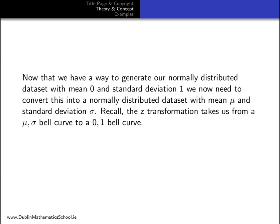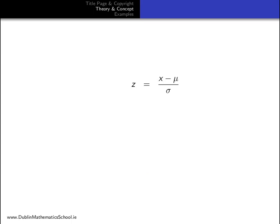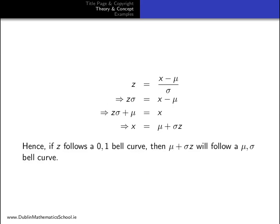Recall, the Z transformation takes us from a μ-σ bell curve to a 0-1 bell curve. Therefore, the inverse of this operation is what we require. Z equals x minus μ over σ. Bringing the σ up to the left and taking the μ over to the left, we arrive at the result that x equals μ plus σZ. Hence, if Z follows a 0-1 bell curve, then μ plus σZ will follow a μ-σ bell curve.